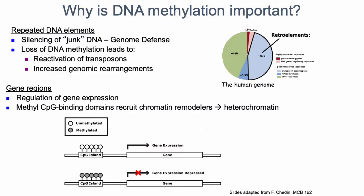In humans, DNA methylation serves two primary purposes: silencing large parts of DNA sequence, and regulating gene expression. In terms of silencing, roughly half of the human genome is either repetitive or has origins in repetitive sequences, and within those sequences there are retrotransposons and transposons that would be active unless silenced. A lot of those regions of the genome are methylated, which basically shuts down activity of those retrotransposons and transposons.